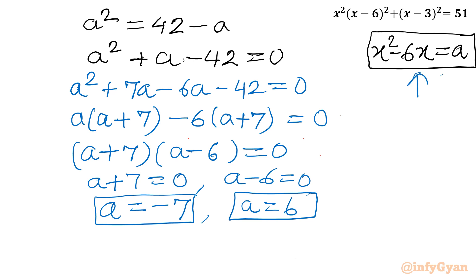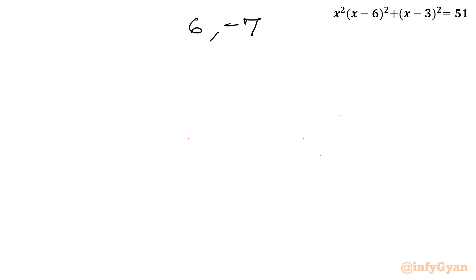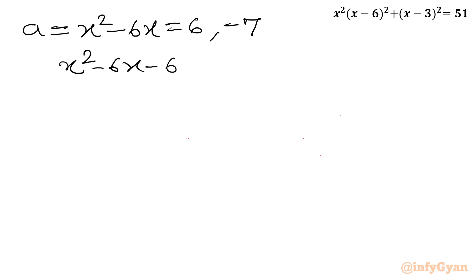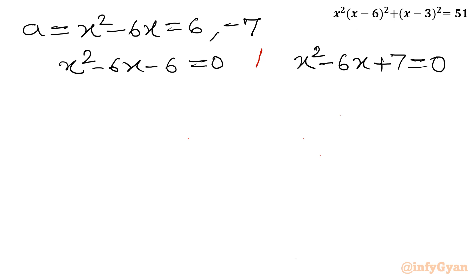Let us put back our substitution. A was x² minus 6x, so I can frame two quadratic equations. With a equals 6: x² minus 6x minus 6 equals 0 (first quadratic). With a equals negative 7: x² minus 6x plus 7 equals 0 (second quadratic). Let us solve these two quadratic equations for our final answer through method number 2.